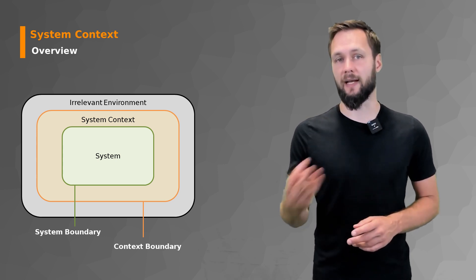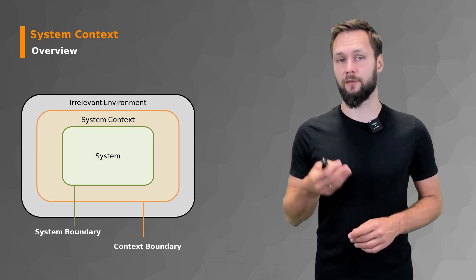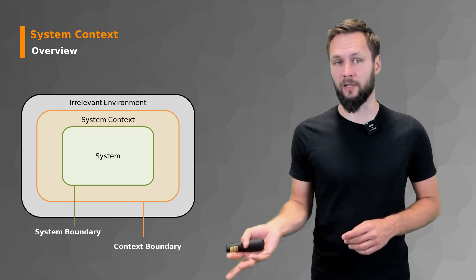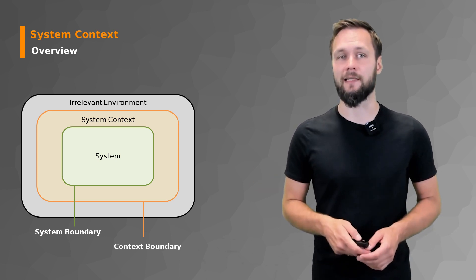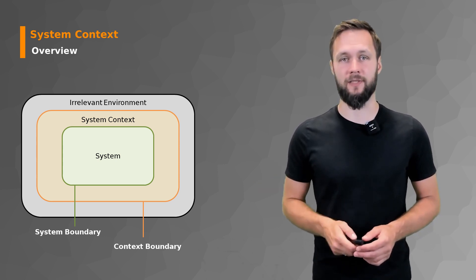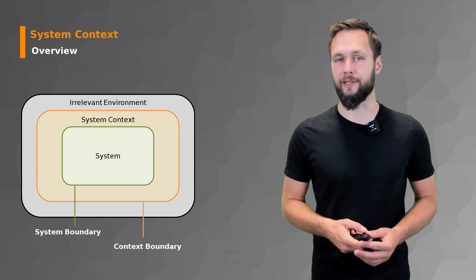The boundary between system and system context is called the system boundary and the boundary between system context and the irrelevant environment is called the context boundary. But all of those we'll now explain in detail. So let's continue with the system context. So the yellow square in the middle.